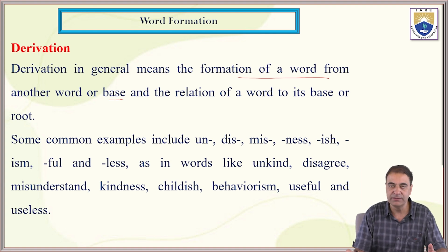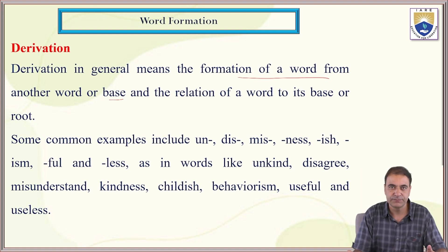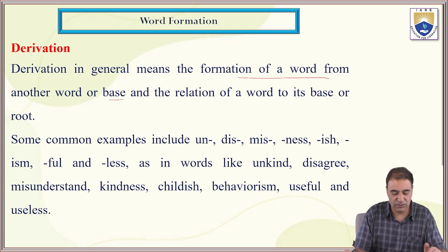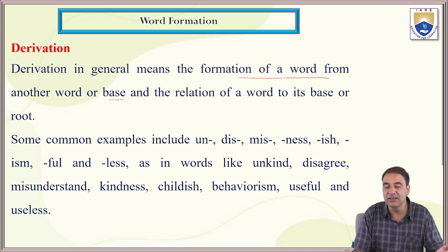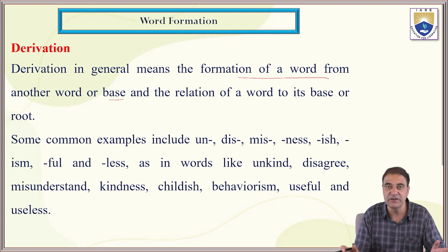Here are some common examples involving suffixes and prefixes. When we add suffixes or prefixes to a root word or base word, we get a new word. For example, prefixes like UN, DIS, MIS, and suffix like NESS. As in the word UNKIND — here the root word is KIND. If we add the prefix UN, it gives a different meaning; we derive a different word from this root word. UNKIND is very much the opposite of KIND. Similarly, we have AGREE as a root word; if we add the prefix DIS, it completely gives the opposite meaning.